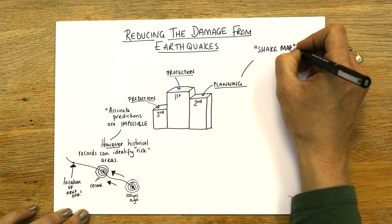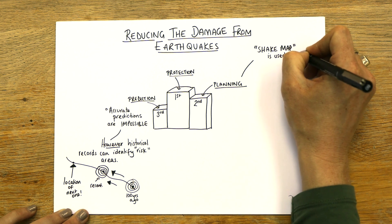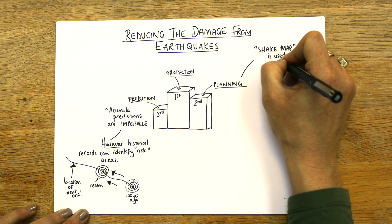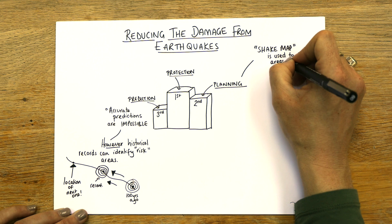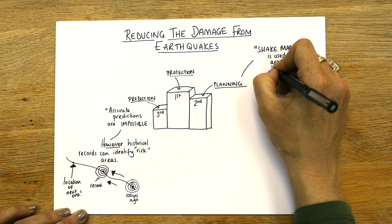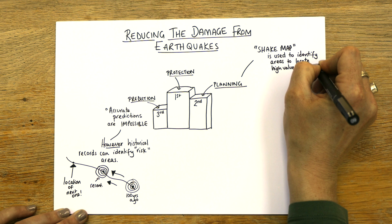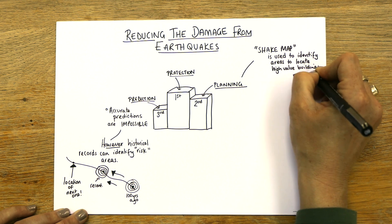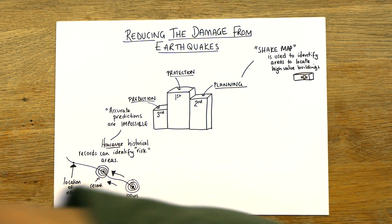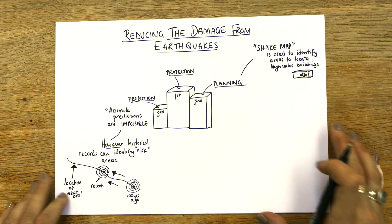A shake map is used to identify areas to locate what we call high-value buildings — so hospitals and other important buildings like government buildings, things that are gonna save people's lives.